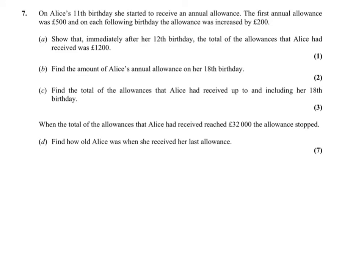Question seven, we've got a series here, an arithmetic series. Show that immediately after a 12th birthday, total allowances received is £1,200. Now that's only one mark, so you shouldn't have to do a huge amount. The first year, year one is £500, year two is £500 plus £200, and would you look at that, that adds up to make £1,200.